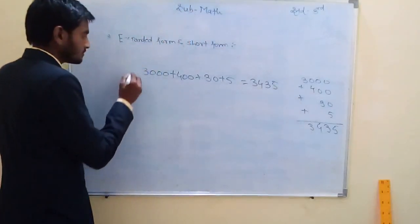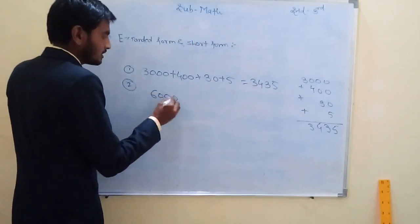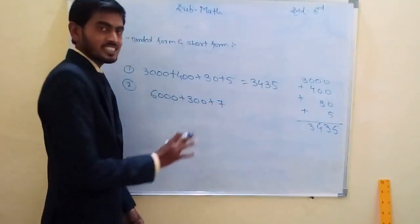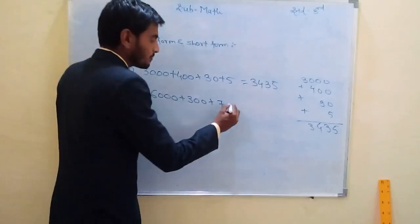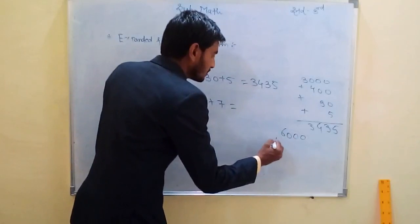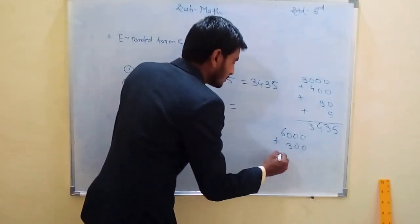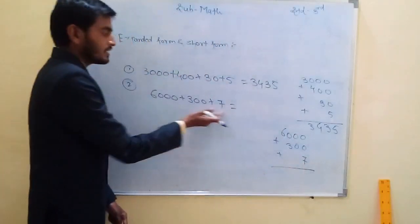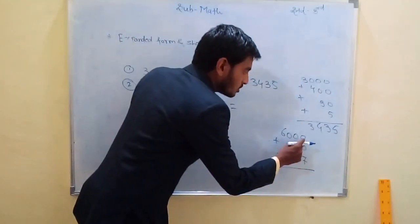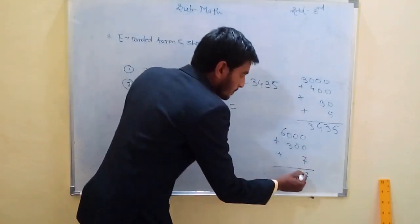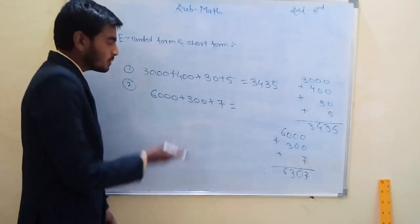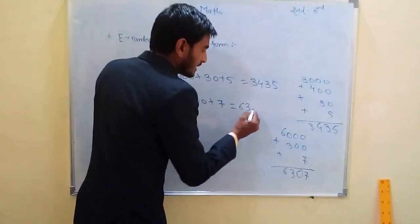Take one more example. The expanded form is 6,000 + 300 + 7. Here the 10's place is missing. How to calculate this? Simply add these numbers. 7 + 0 + 0 = 7. The 10's place is 0 + 0 = 0. 3 + 0 = 3. And last one, 6. Means the short form of this expanded form is 6,307.